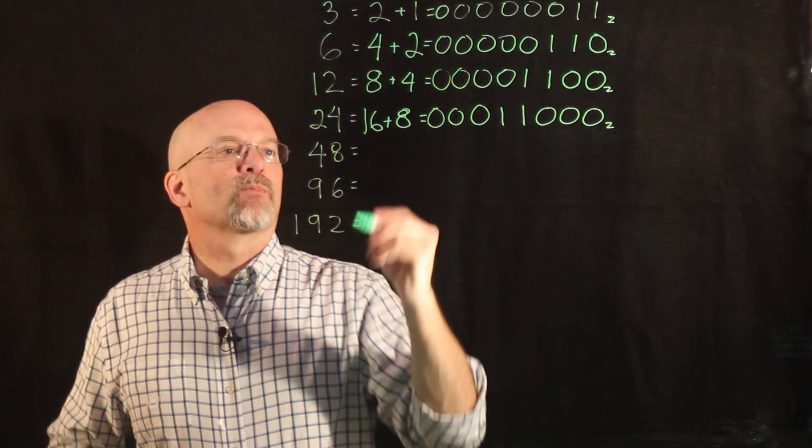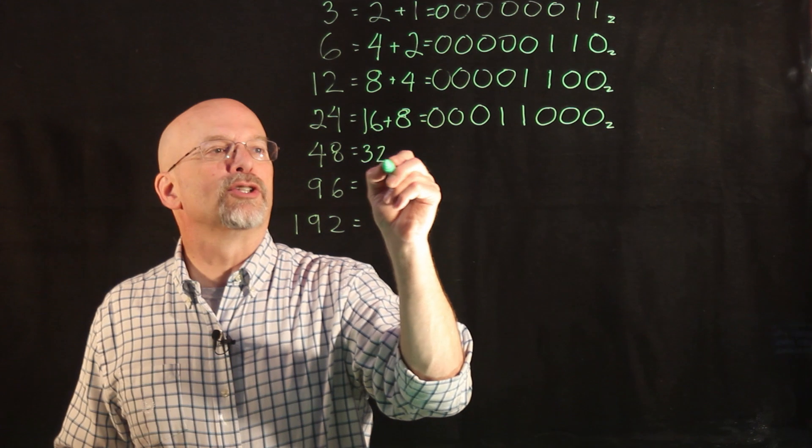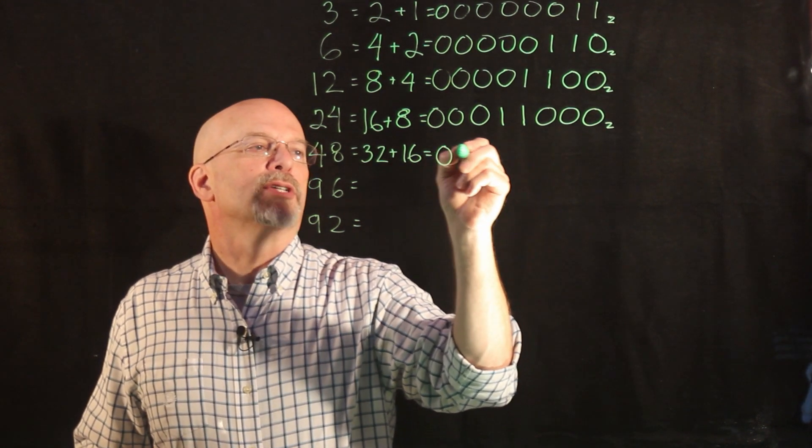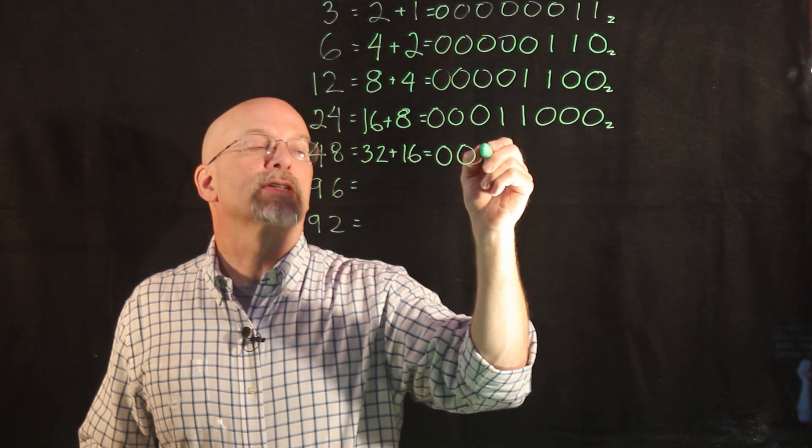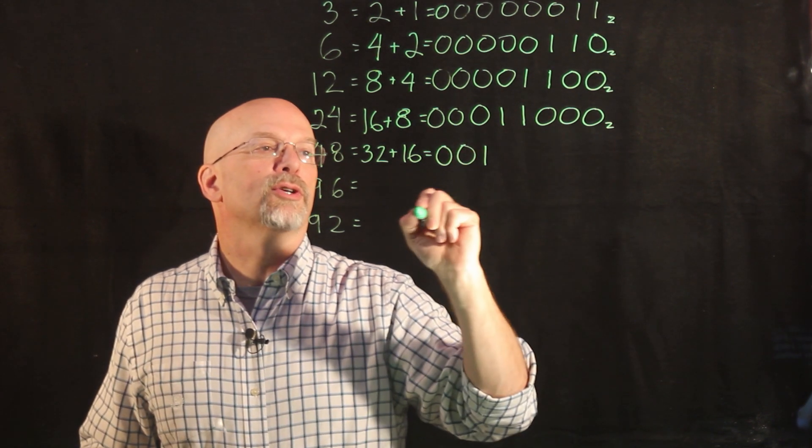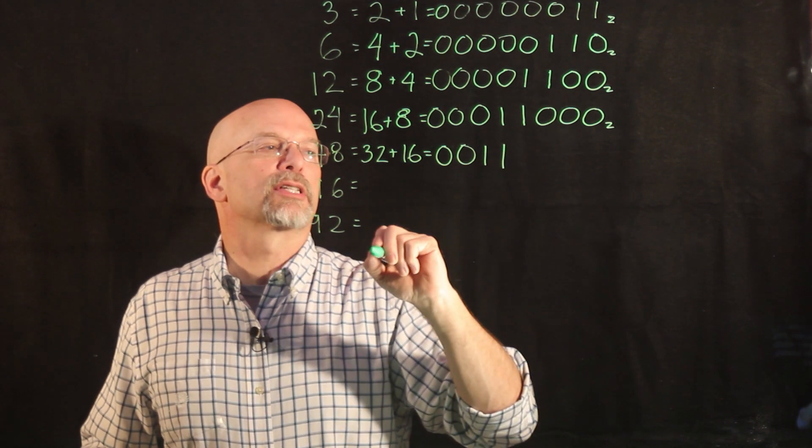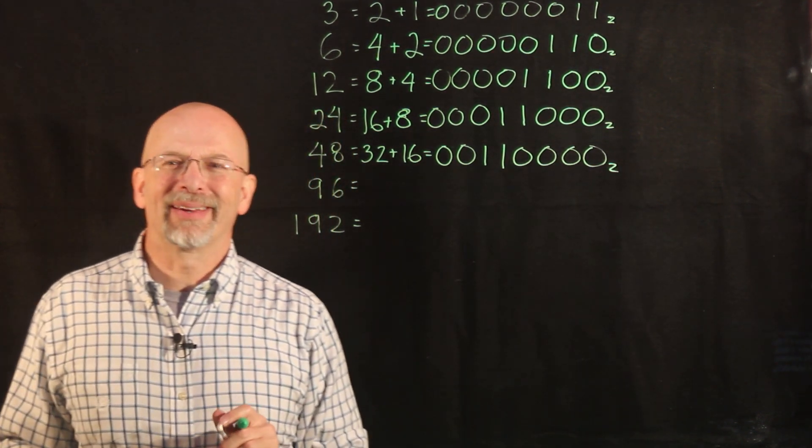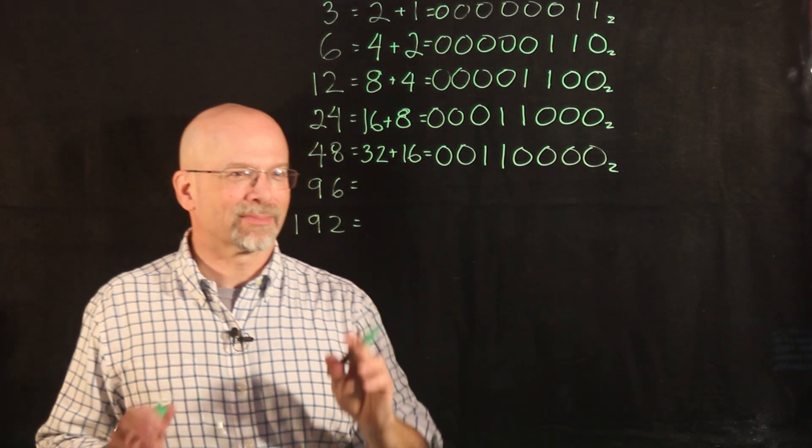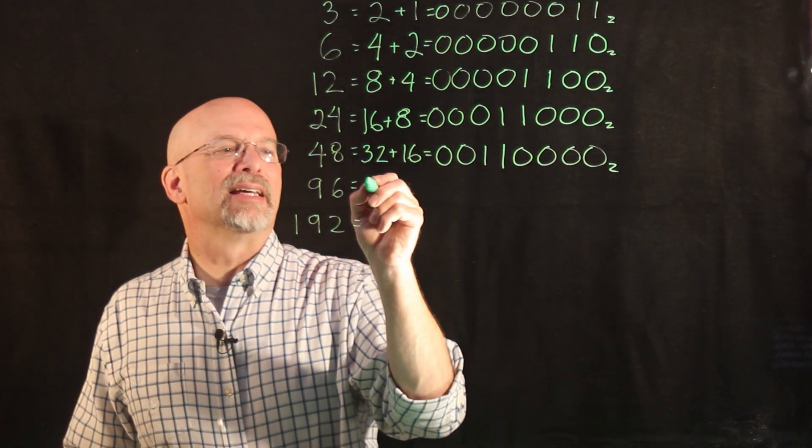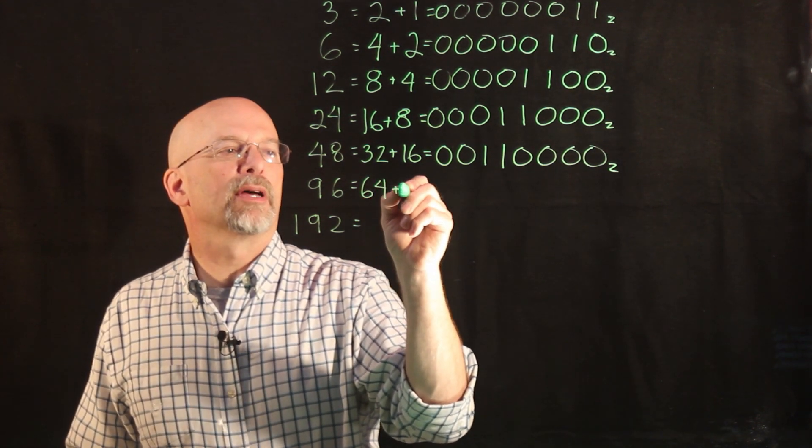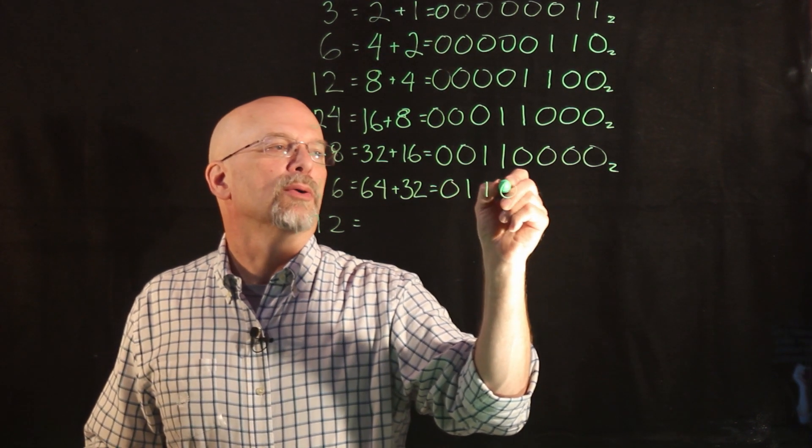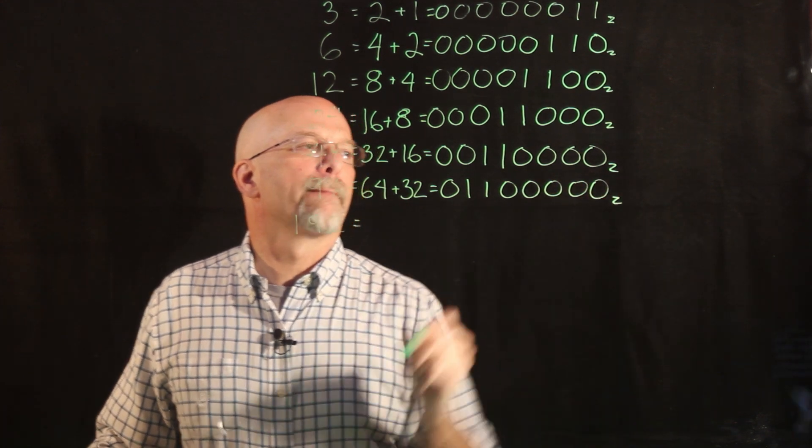48 is 32 plus 16, which means the two to the fifth position and the two to the fourth position have ones. Notice a pattern happening here. 96 is 64 plus 32, which is equal to, in binary, 01100000.